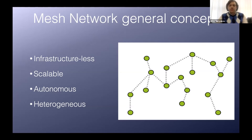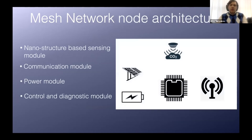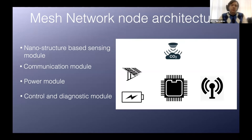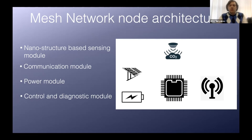The architecture of a single node is straightforward, designed to keep it autonomous and simple. We have a sensing module — in our case based on oxide nanomaterial structures — a communication module supporting neighbor communication, a power module supporting charge/discharge monitoring and power source control, and a general control module that handles diagnostics and additional calculations for the entire architecture.